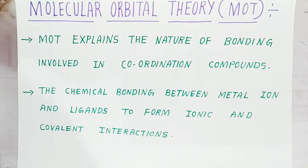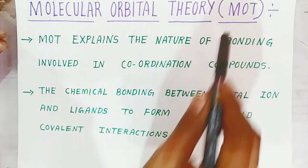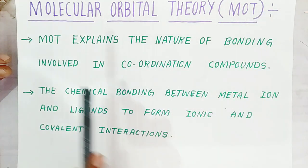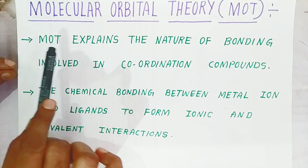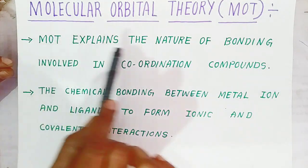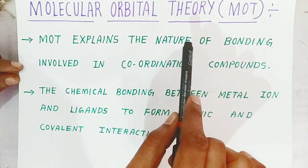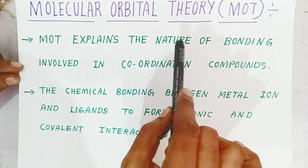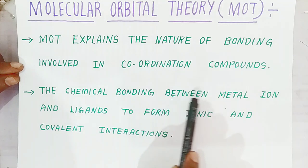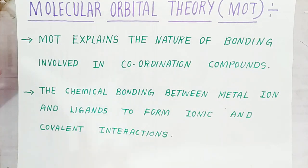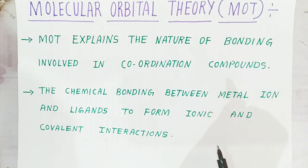Hello students, once again welcome to Bholanath Academy. Today we are going to see the Molecular Orbital Theory, in short MOT. MOT explains the nature of bonding involved in the coordination compound — whether it is ionic bond or covalent bond. The chemical bonding between metal ion and the ligand forms both ionic and covalent interaction, which we can explain using MOT.